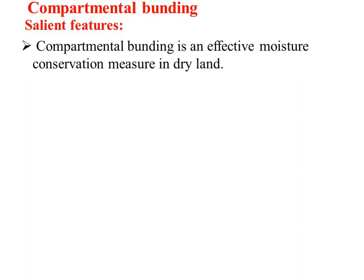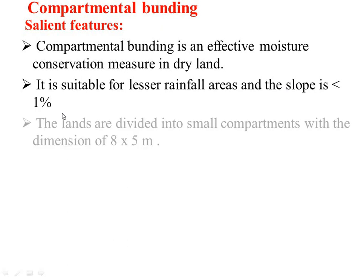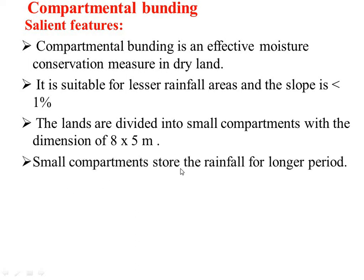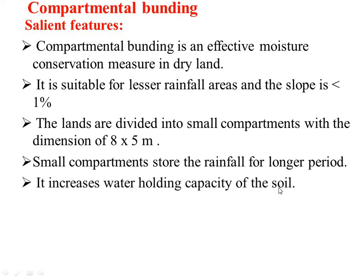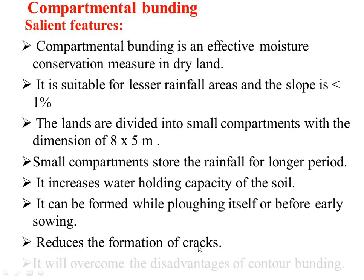The salient features of compartmental bunding are that it is an effective moisture conservation measure in dryland. It is suitable for lesser rainfall areas where the slope is less than 1%, with lands divided into small compartments of 8 by 5 meter dimensions. Small compartments store rainfall for longer periods, increase water holding capacity of the soil, can be formed while plowing or before early sowing, reduce the formation of cracks, and overcome the disadvantages of contour bunding.